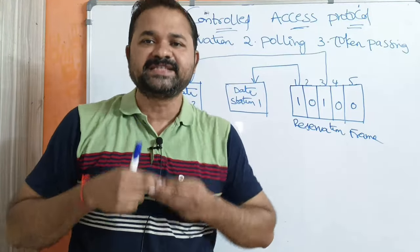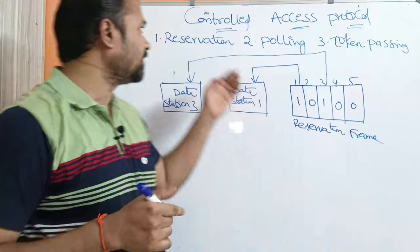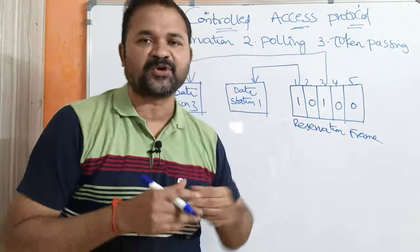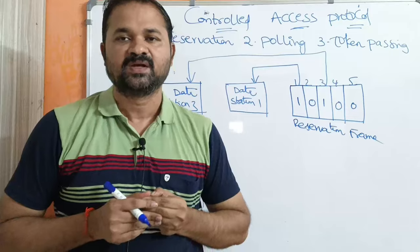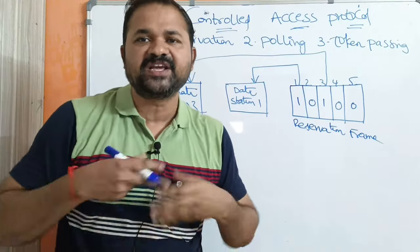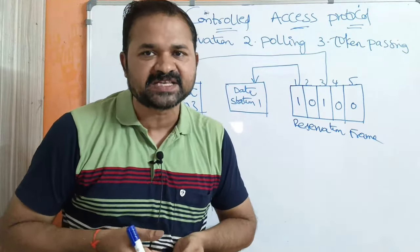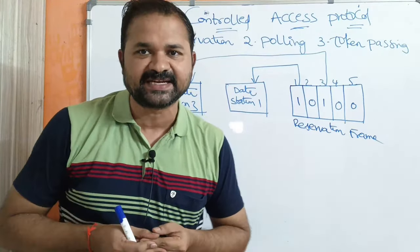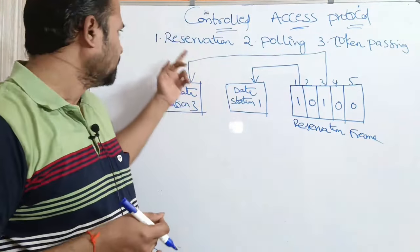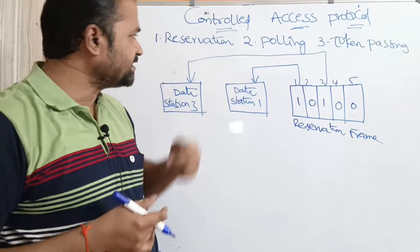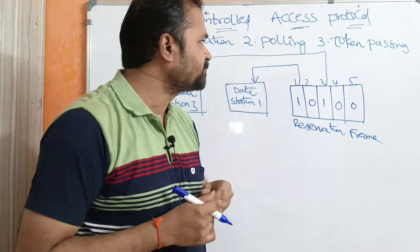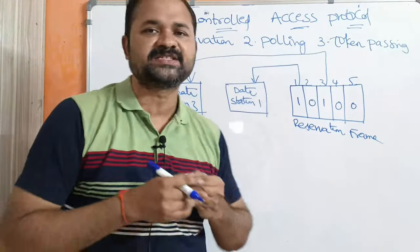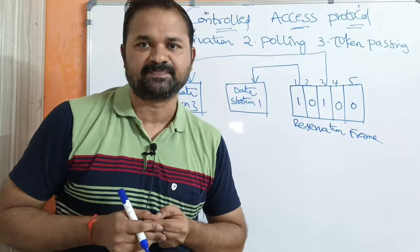Now let us discuss about controlled access protocols. We have three controlled access protocols or three methods. The first one is reservation, the second one is polling, and the third one is token passing.